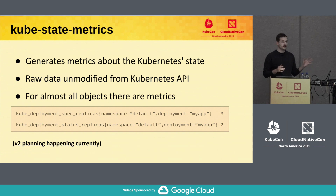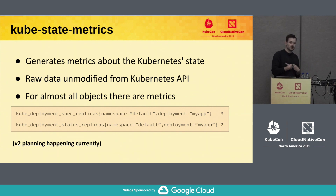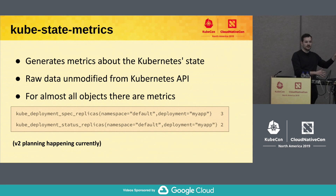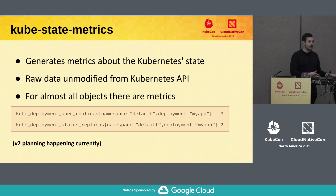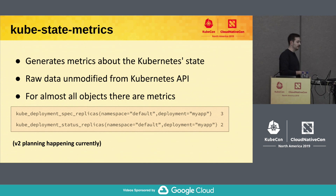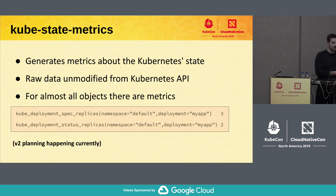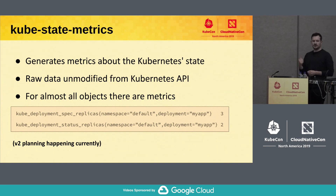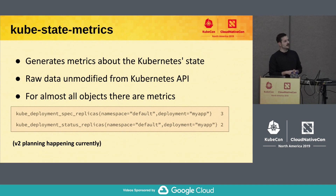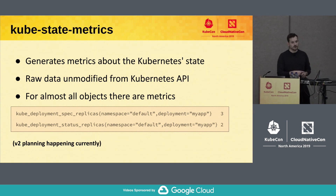Kube-state-metrics has existed for a really long time — it was one of the very first projects I contributed to within Kubernetes. It's a really cool project to get involved with, because there's almost certainly some metric we're missing, and if you have a use for it — want to graph it or alert on it — we're happy to accept those. Over the years we've also accumulated some technical debt, which is why we're planning version 2 of kube-state-metrics.